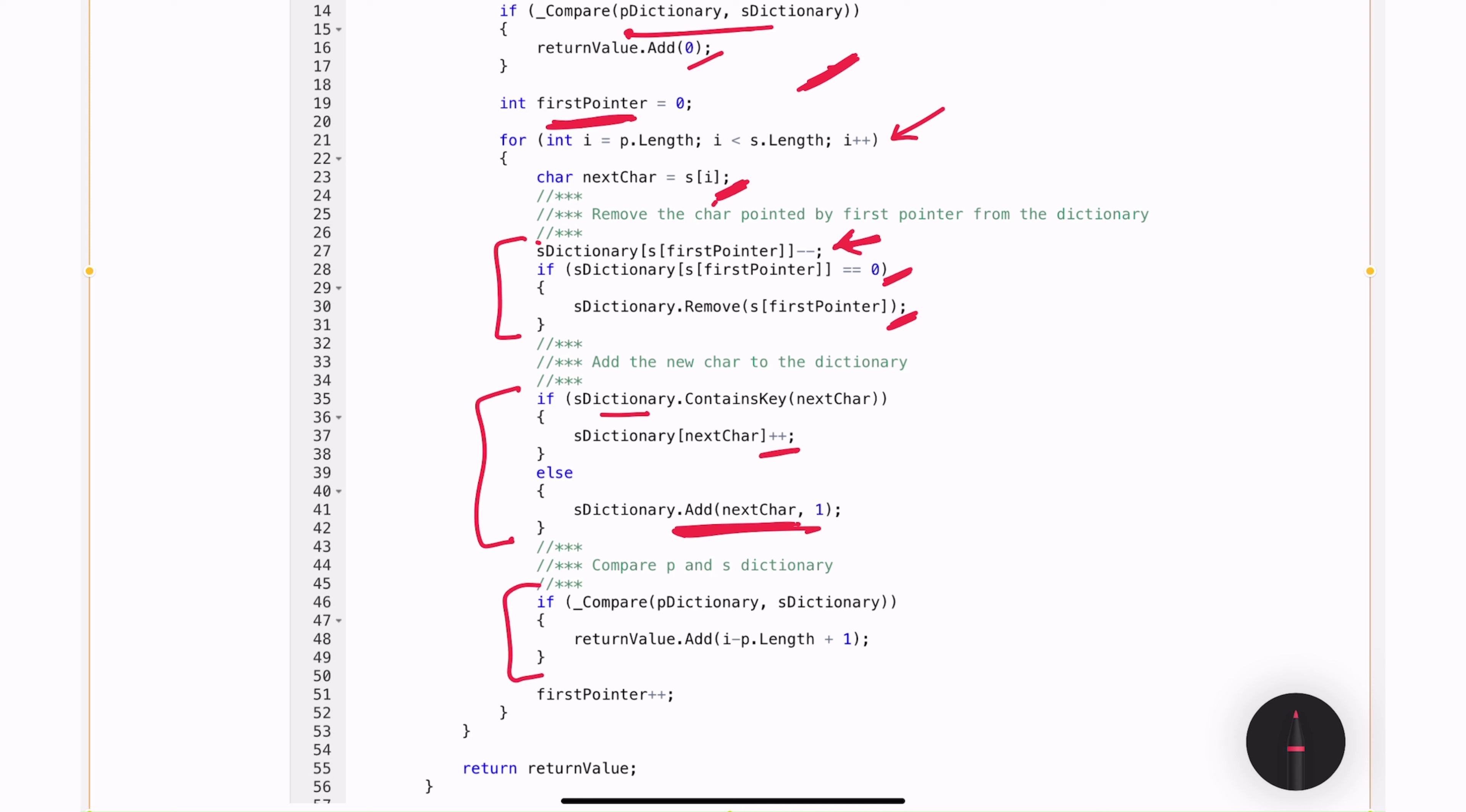And if the two dictionaries match, then I'm adding the index of i minus p length plus 1. Because my i right now is pointing at the last character of the substring. So I need to retrace my steps back and calculate the starting index of the string. Hence, I am doing i minus p of length plus 1. After this is complete, I am incrementing my first pointer because now in the next iteration, I need to remove the next character. After the whole for each loop is complete, I will have all the right indexes added to this return value variable. And I'm returning it on line 55.